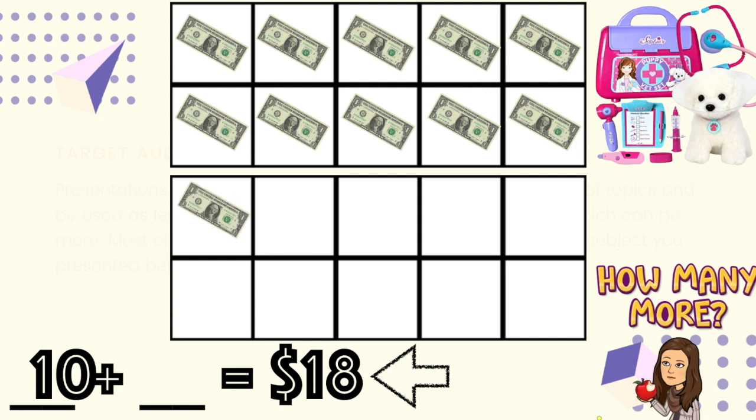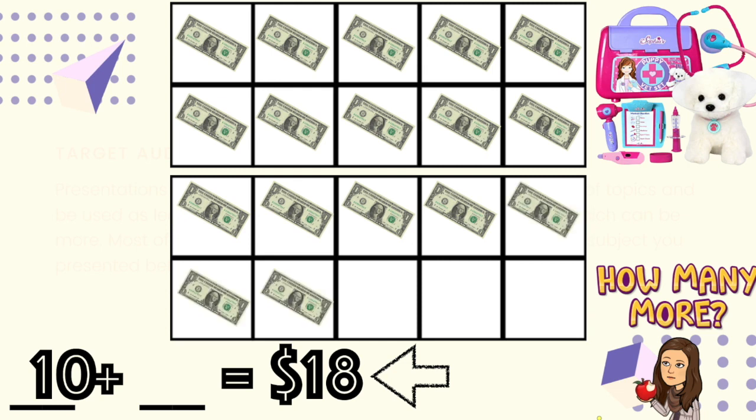11, 12, 13, 14, 15, 16, 17, 18. How many more dollars did it take to get to 18? You're right! Eight more dollars. 10 plus 8 equals 18. Once I have eight more dollars, I can buy my vet set.